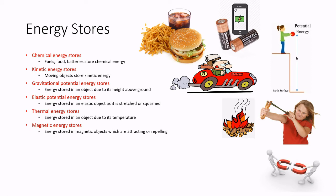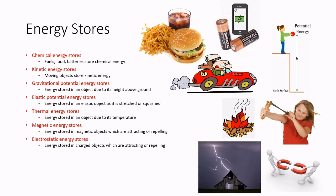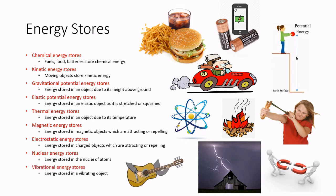Magnetic stores describe the energy in magnetic objects which are attracted or repelling each other. Similarly, we've got the electrostatic stores, in which charged objects are attracting or repelling each other. Then there's the nuclear store, where energy is held inside the nucleus of an atom. And finally, there's the vibrational store of energy in a vibrating object.